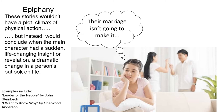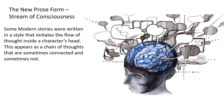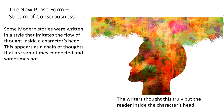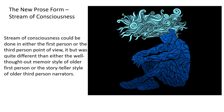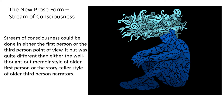Finally, we need to talk about stream of consciousness. Some modern stories were written in a style that imitates the flow of thoughts inside a character's head. This appears as a chain of thinking that is sometimes connected and sometimes not, just the way a real person would think. Writers thought this truly put the reader inside the character's head. Stream of consciousness could be done either in the first-person or the third-person point of view. It was quite different from either the well-thought-out memoir style of the old first-person or the storyteller style of older third-person narrators.